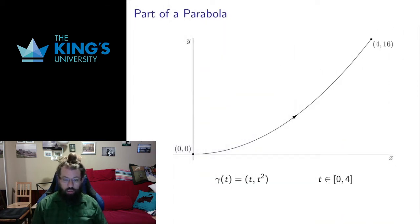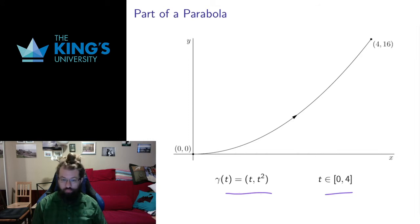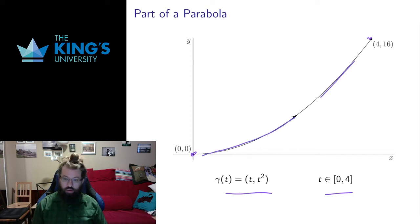The first thing I want to talk about is parametrization. Here is the part of a parabola that can be described by the parametric curve (t, t²) for t going from 0 to 4. That gives me this piece of this parabolic shape, starting at (0, 0) and ending at (4, 16). It has movement along it, and with the t² term, I imagine this movement to be accelerating as I go along — through (1,1), (2,4), (3,9), ending at (4,16).